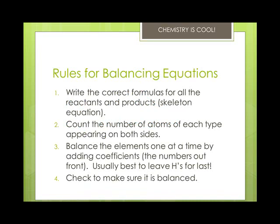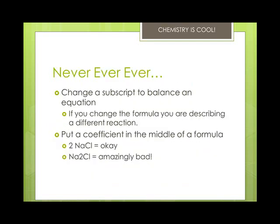There are four rules for balancing equations. First, write the correct formulas for all reactants and products in the skeleton equation. Second, count the number of atoms of each type on both sides. Third, balance elements one at a time by adding coefficients — the numbers out front — and leave hydrogens for last. Fourth, check that it's balanced. Never change a subscript to balance an equation; that describes a different reaction entirely. Don't put a coefficient in the middle of a formula: 2NaCl is correct, Na2Cl would be dangerously wrong.